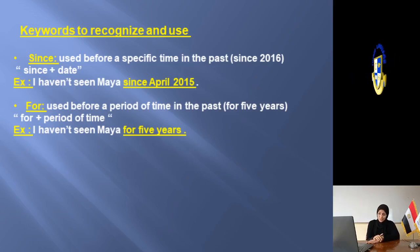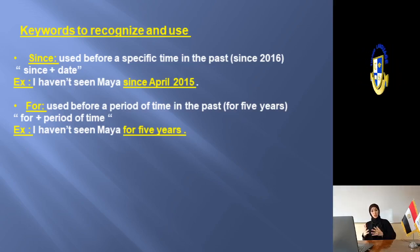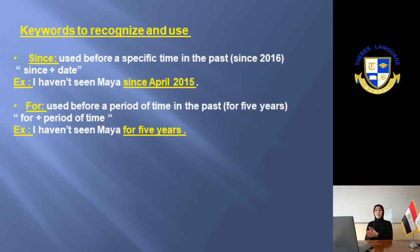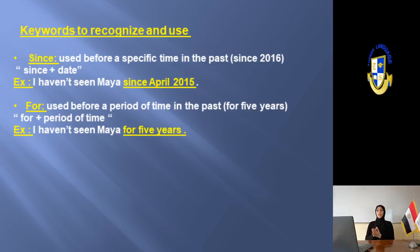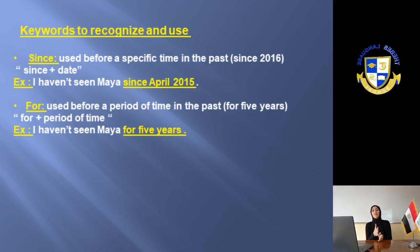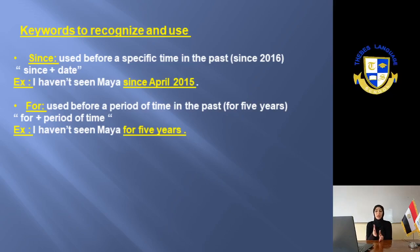Now for the form. The affirmative form: if you have I, we, you, they — use 'have' plus the past participle of the verb. For example: 'I have just finished my homework.' Don't forget there are irregular verbs in the past participle — study them well. If you have he, she, or it — use 'has' plus the past participle of the verb. For example: 'Sarah has already finished her homework.'